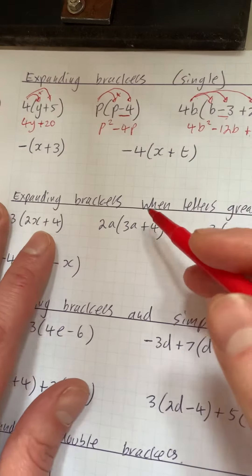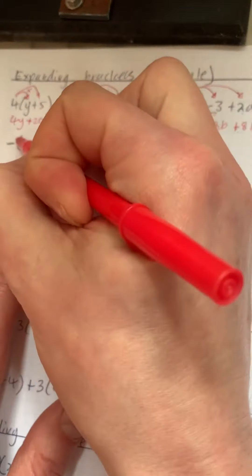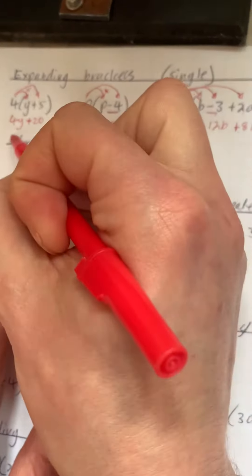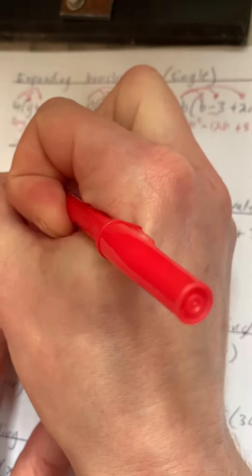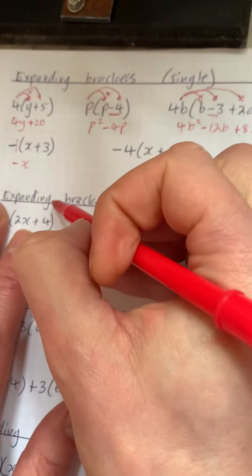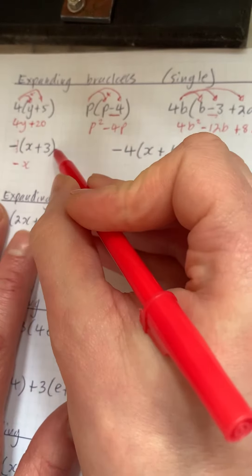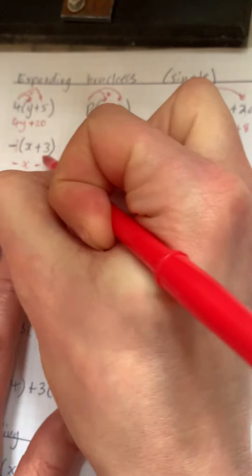Next one, I've got this one just because it's a bit of a weird one. Basically, we've got minus in the bracket. If we think about this as minus 1, minus 1 times x is minus 1x, or minus x, and then minus 1 times 3 is minus 3.